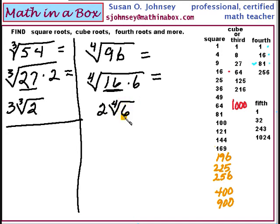So learn these lists. Memorize them so that if you see an 81, you'll think, oh, that's a square. Or if you see 125, you'll think, oh, that's one of my cubes. It's okay to take a moment to think of which cube or square it is, but you need to recognize these numbers as your powers — your squares, cubes, or fourth powers. You will find working square roots, cube roots, and fourth roots much easier if you memorize these. I have another video that will teach you how to find the roots using variables. This is Susan Johnsey with mathinabox.com — email me any questions you have. Thanks.